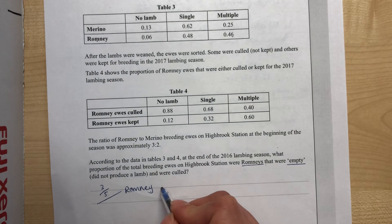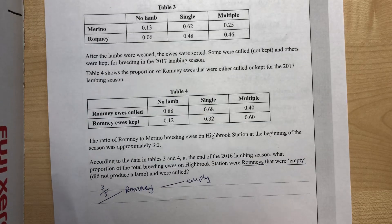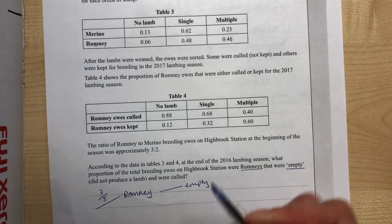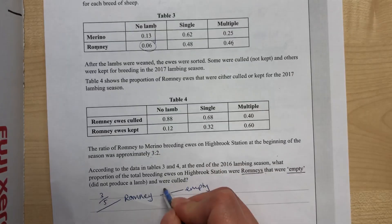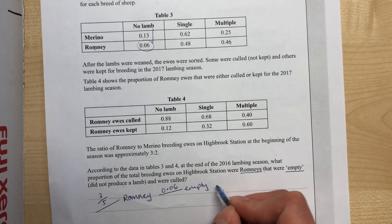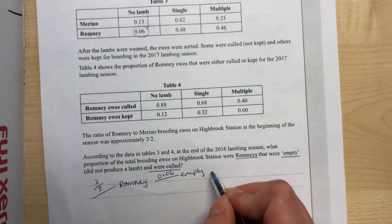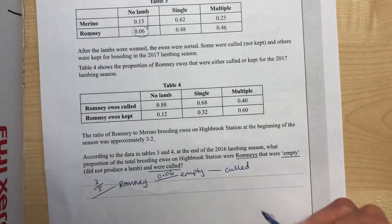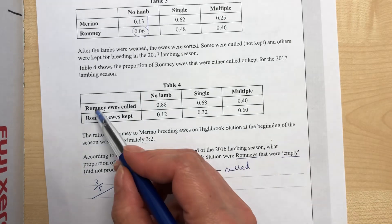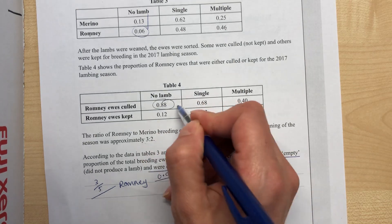Next, that they were empty — meaning they did not produce a lamb. That would be our next branch: empty. This value is 0.06, found under our Romney category where no lambs is 0.06. The next choice being made is that they were then culled. I'm only filling in the branch we're interested in. The probability that a Romney ewe was culled given that she had not produced a lamb is 0.88.